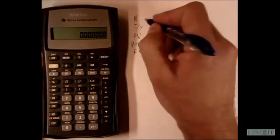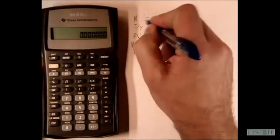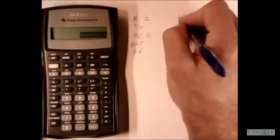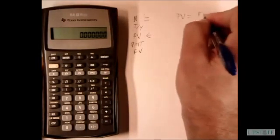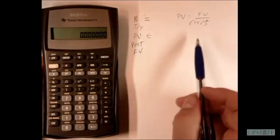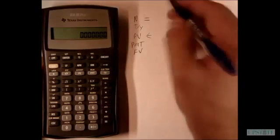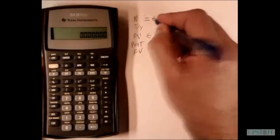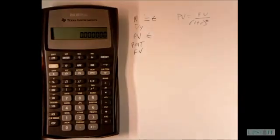So N here is basically, we can think of this with our time value money formula. We have PV equals future value divided by 1 plus r to the t power, right? That's the standard notation that we typically will use. That N here, that's going to be our t, our number of time periods until we receive the payments.